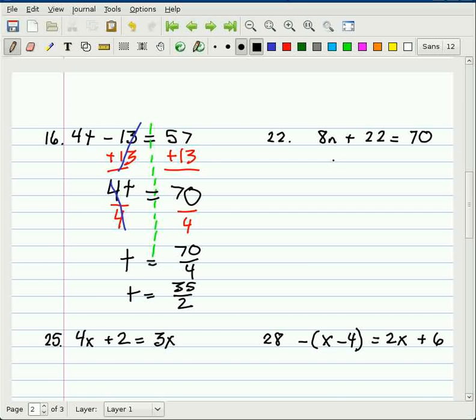Over here on number 22, another two-step equation. We're still splitting that thing right down the equal sign. The inverse operation for plus 22 is minus 22. You have to do it to both sides. And as you know by now, these 22's are gone. So we end up with 8n equals. Oh, my goodness. That must be about 48.